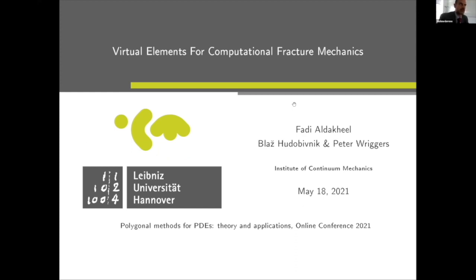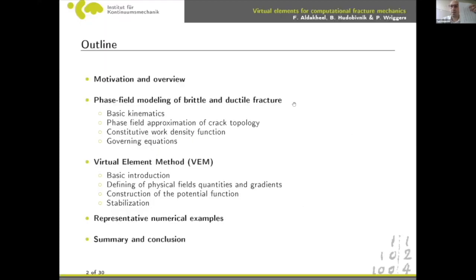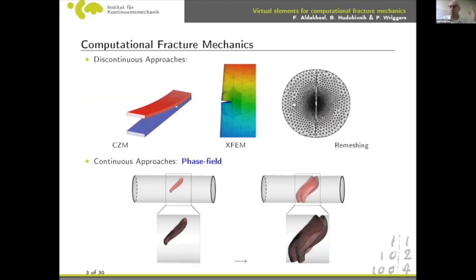In structural mechanics, we generally separate a body into two or more parts. There are different approaches to model this: the discontinuous approach to fracture includes cohesive zone methods, remeshing techniques, and others. Most of them require computational cost and require knowledge of fracture initiation or collision criteria in advance.